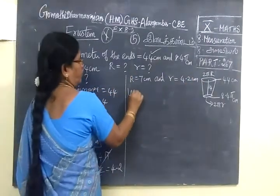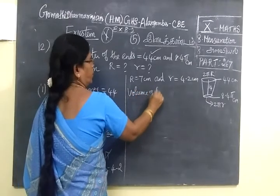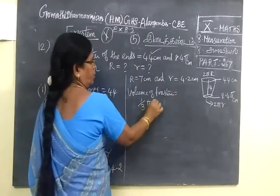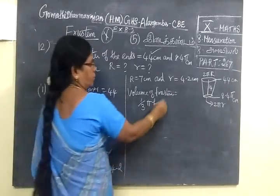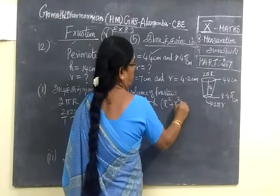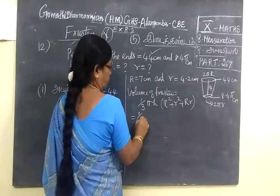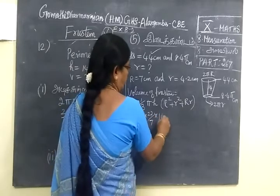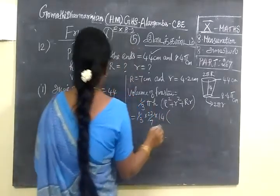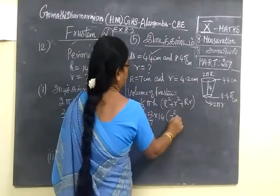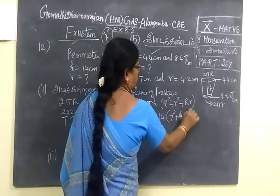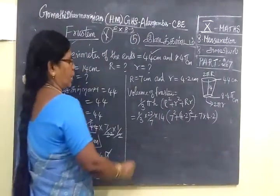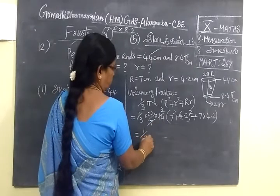Now you will find the volume. You write capital R square plus small r square plus capital R into small r. Then V equals to 1 by 3, 22 by 7, height is given as 14. Capital R is 7, so 7 square. Small r is 4.2 square plus 7 into 4.2.